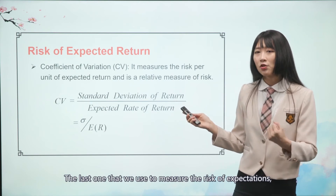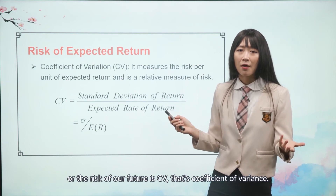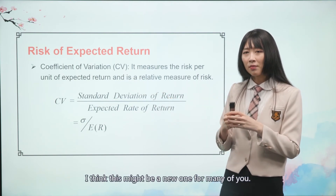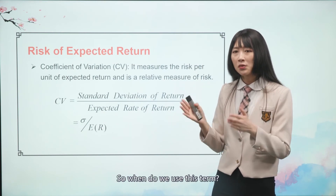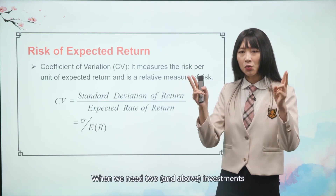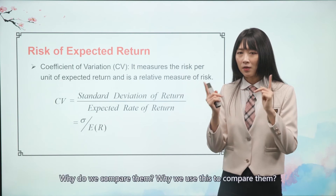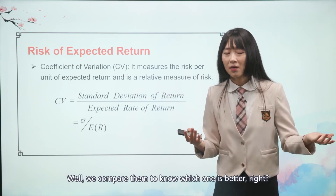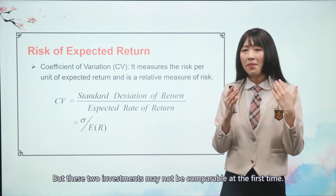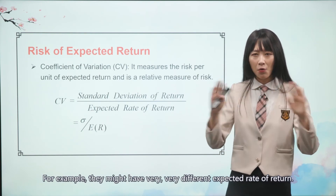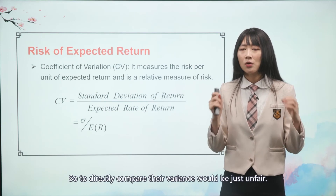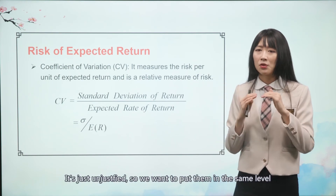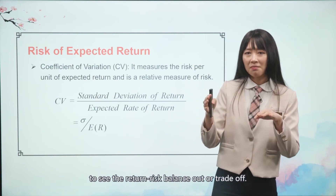The last measure we use to quantify the risk of our expectations for the future is CV — the coefficient of variance. This may be a new concept for many of you. We use it when we need to compare two investments with each other to know which one is better. These two investments may not be directly comparable at first — for example, they might have very different expected rates of return, so directly comparing their variance would be unjustified.